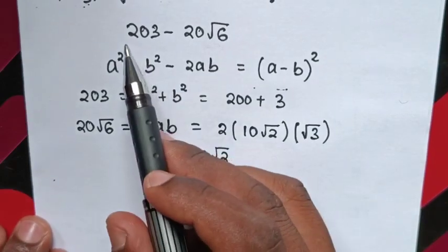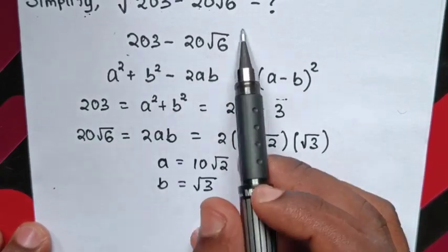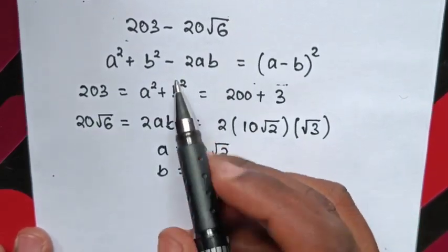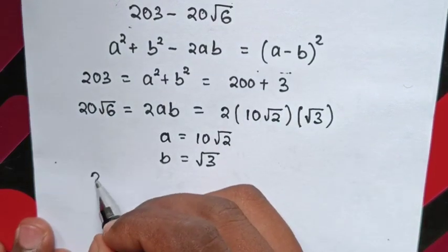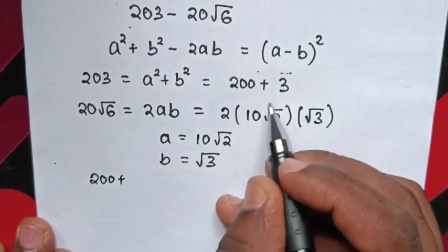Then recall from this expression was under square root. We can see 200 plus 3.